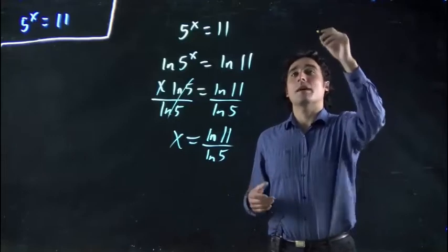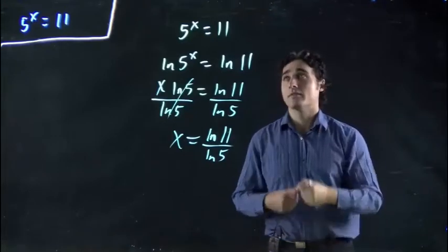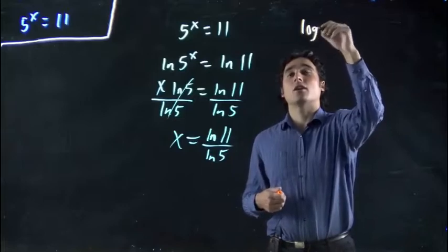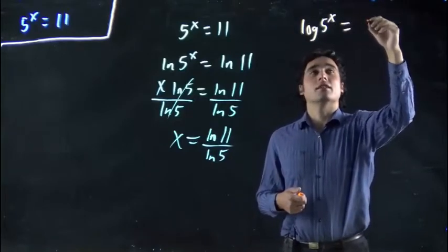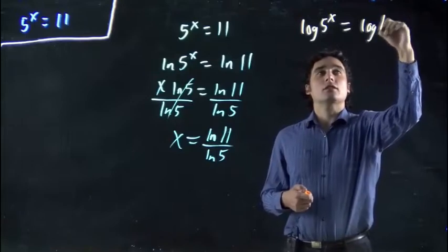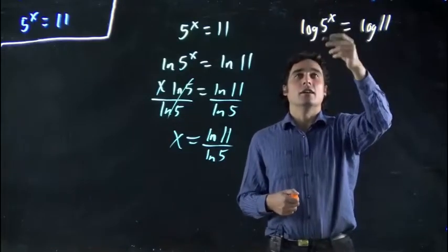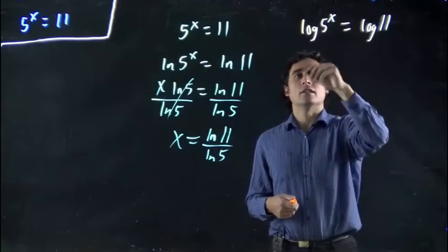If I used log to the base 10, which again I can rewrite as just log, I can do the same exact problem with log or any base that I wanted. So I've actually jumped the step. I'm writing log of 5x equals log 11.